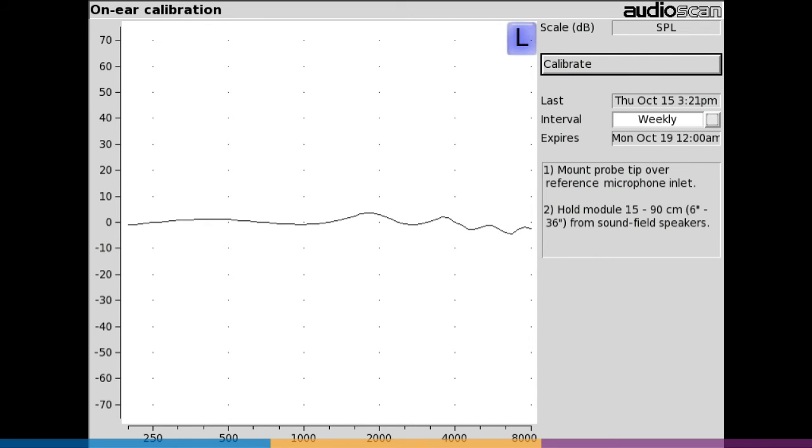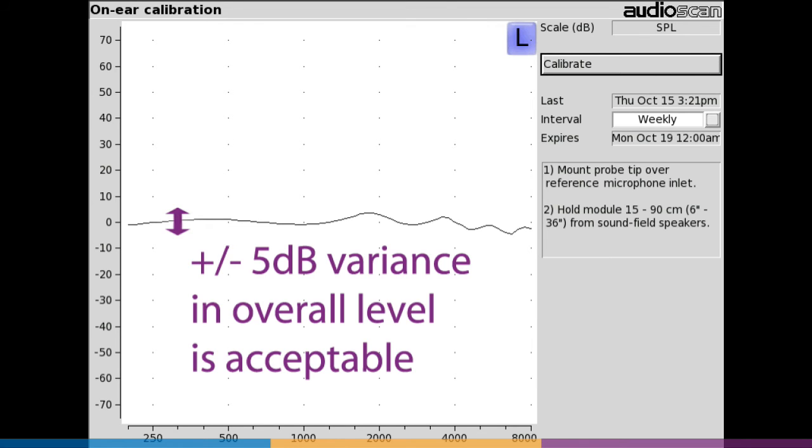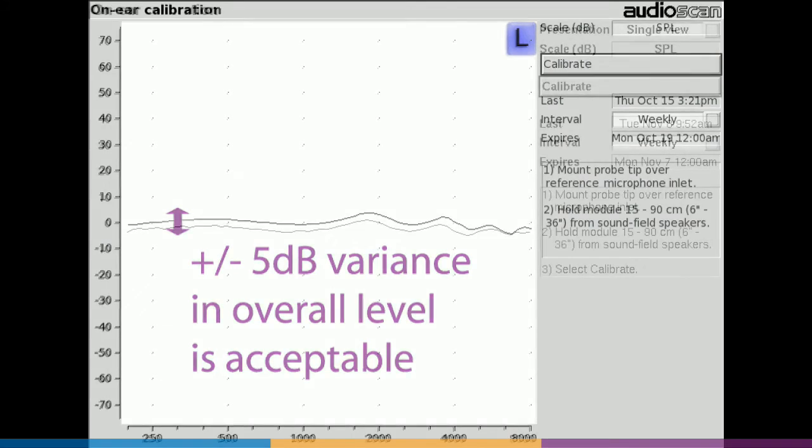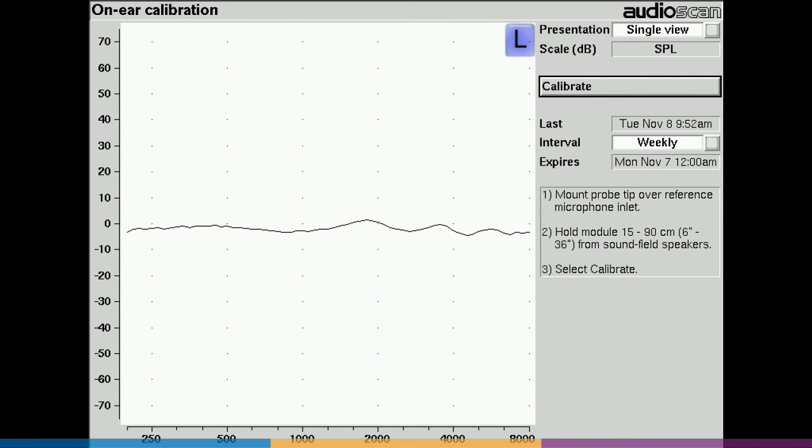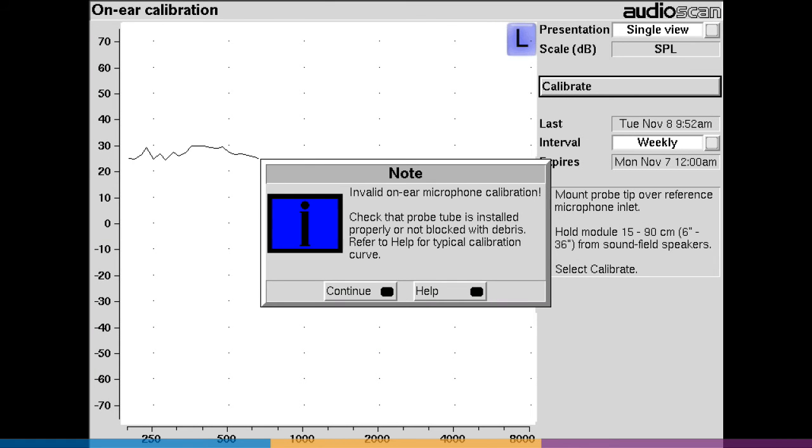The calibration curve should be relatively smooth with gentle undulations in the high frequencies due to tube resonance. Overall level is not important and may vary from microphone to microphone, but typically only plus or minus 5dB. AudioScan's new smart calibration monitors for improper curves and will flag errors and warn the user.